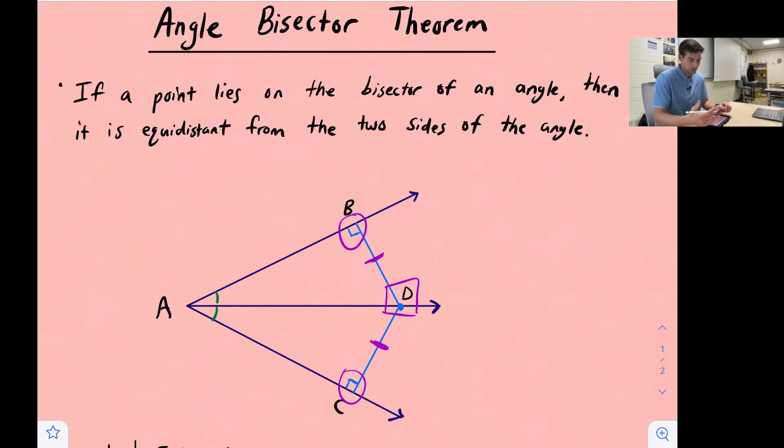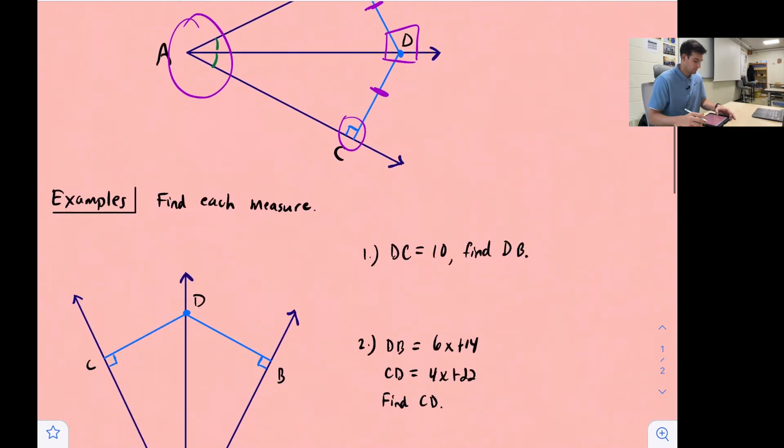So if they are perpendicular, then those two segments BD and DC are going to be congruent, and so then that's going to tell us that these two angles down here are also congruent. Okay, so let's apply this a little bit to an example.